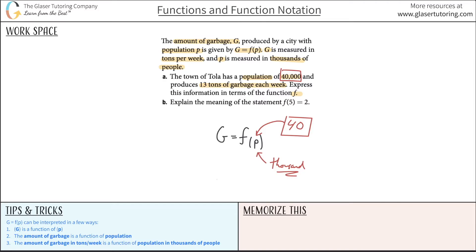Now it says produces 13 tons of garbage each week. Remember that the G here stands for the amount of garbage in tons per week. They said 13 tons of garbage each week, so this one's easy. The number here that we can plug in for G is simply 13, because G represents the amount of garbage in tons per week, and they told us that the city's producing 13 tons of garbage per week. So I can simply now write this function.